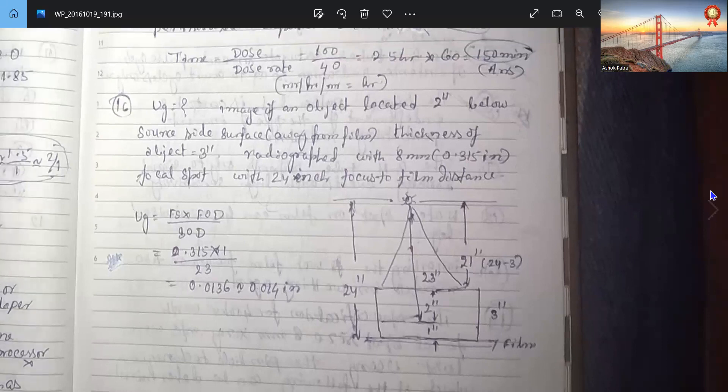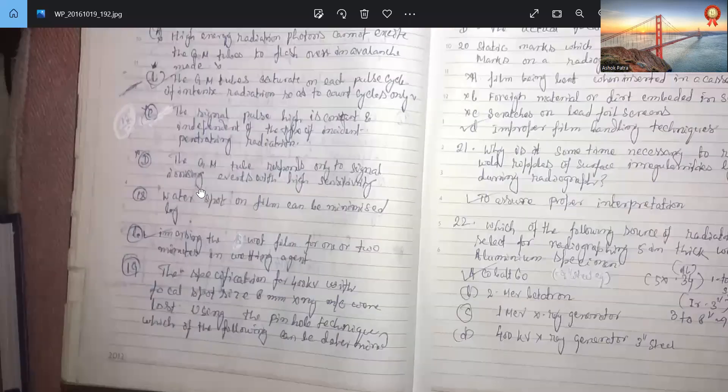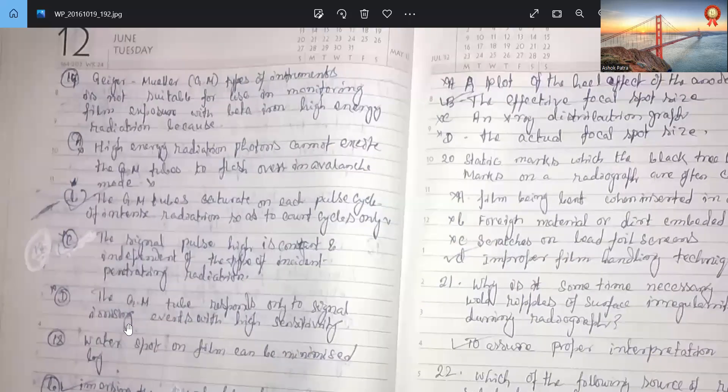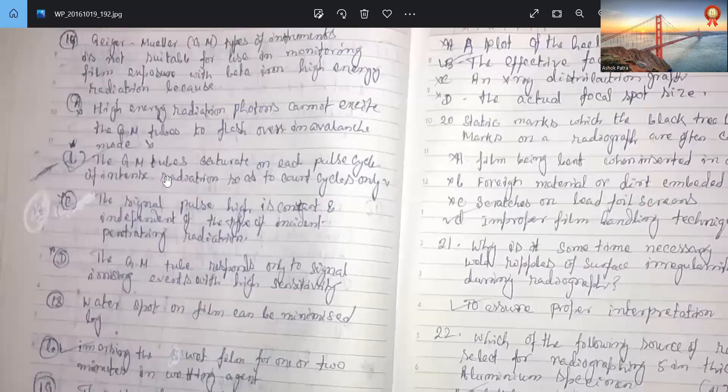So this is okay. Geiger-Müller types of instrument is not suitable for use in monitoring film exposure with beta emission because the Geiger-Müller tubes saturate on each pulse cycle of intense radiation so as to count cycles only.